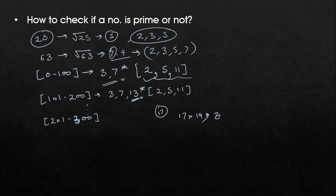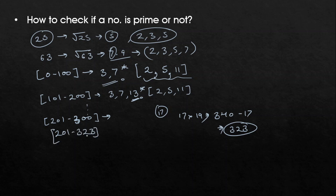17×20 = 340, minus 17 gives 323. So for numbers from 201 to 323, you'd check divisibility by 3, 7, 13, and also 17. You would check 17×19, 17×23, and so on. The pattern extends by adding the next prime to your divisibility checklist.